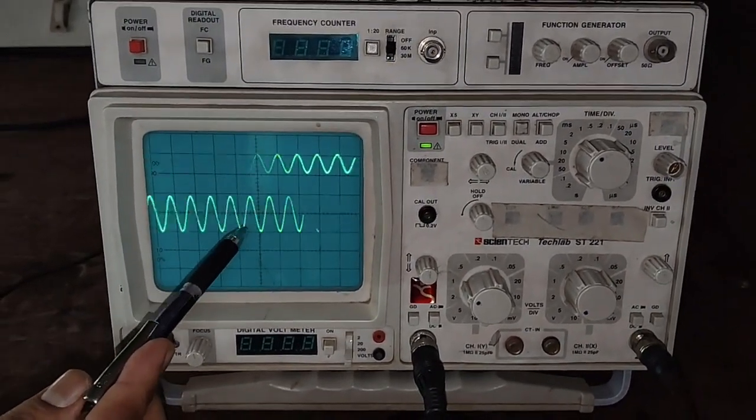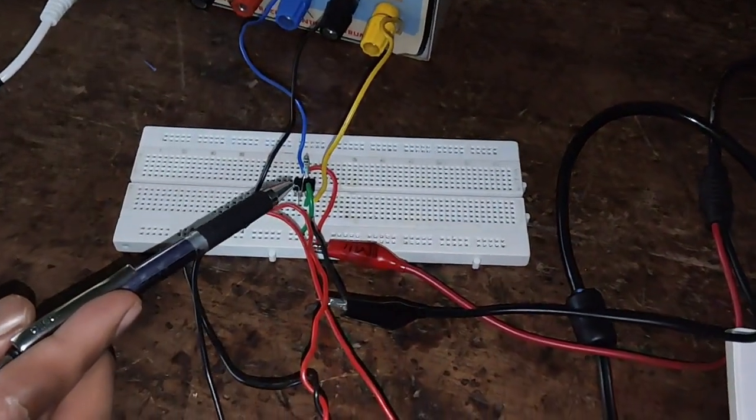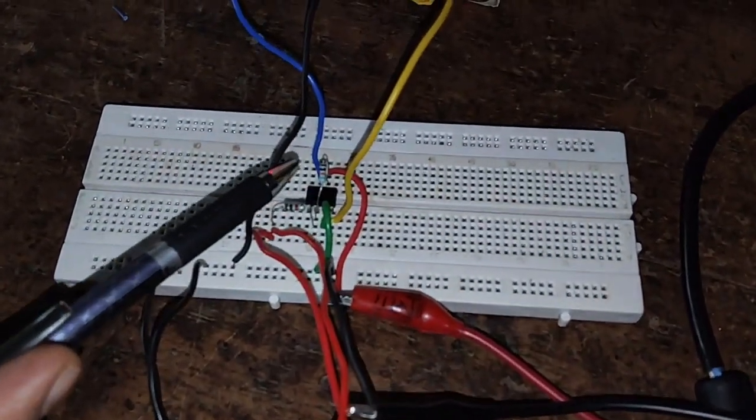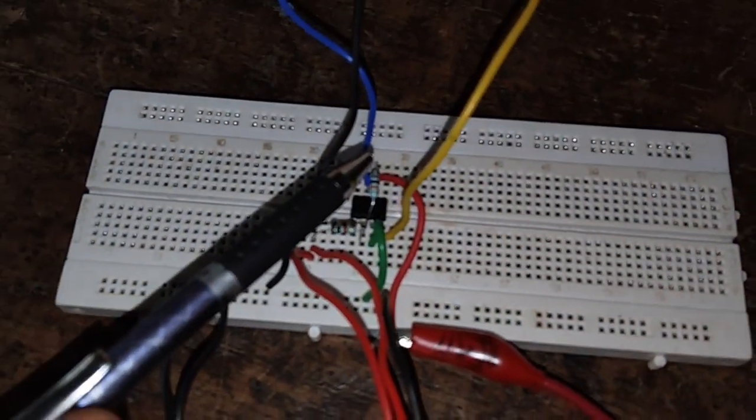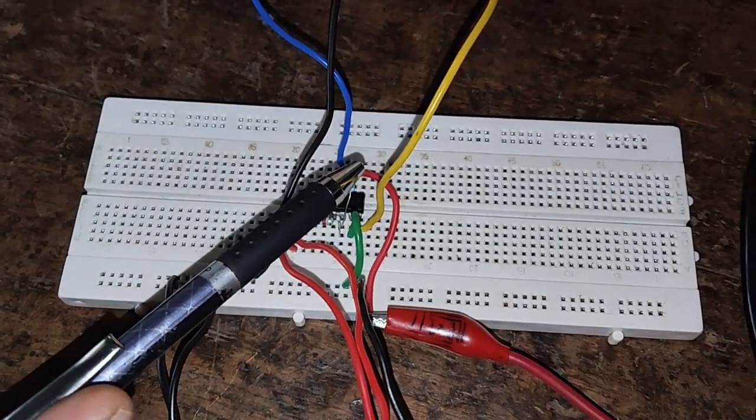Now we will check its output. Here in the circuit diagram, the channel 2 of CRO is connected to pin number 6. At pin number 6, we get amplified version of the input.